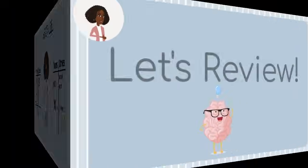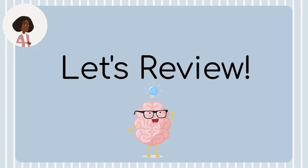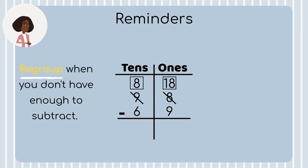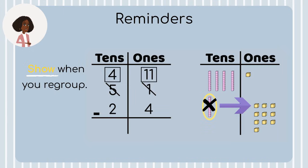Awesome job. Before you go, let's review what we learned today. When you're subtracting, always start in the ones place — this is very important because you might need to regroup and you wouldn't know that unless you started in the ones place. You only regroup if you don't have enough to subtract. If you do have enough, then there's no need to regroup — you just keep subtracting. Make sure you show that you regrouped in your model and your numbers. When showing regrouping in your numbers, cross out your number and write the new amount on top in both the tens place and the ones place. If you don't, you might forget you regrouped and that'll mess up your math.